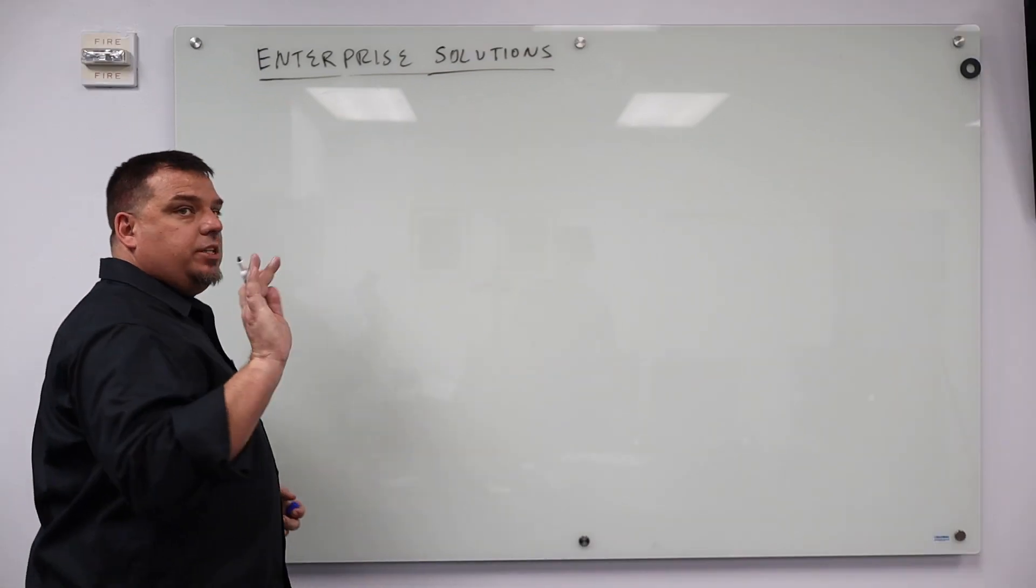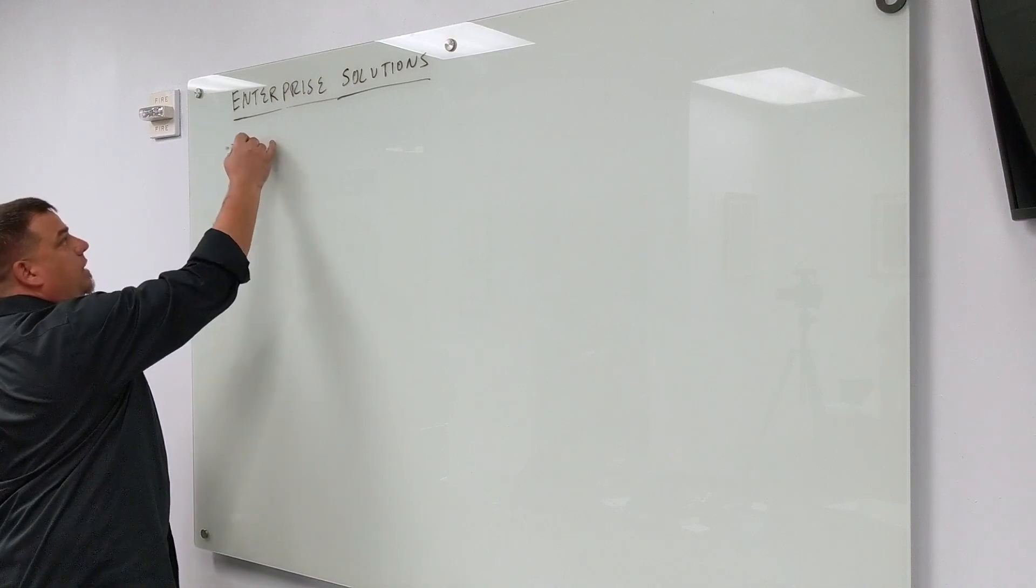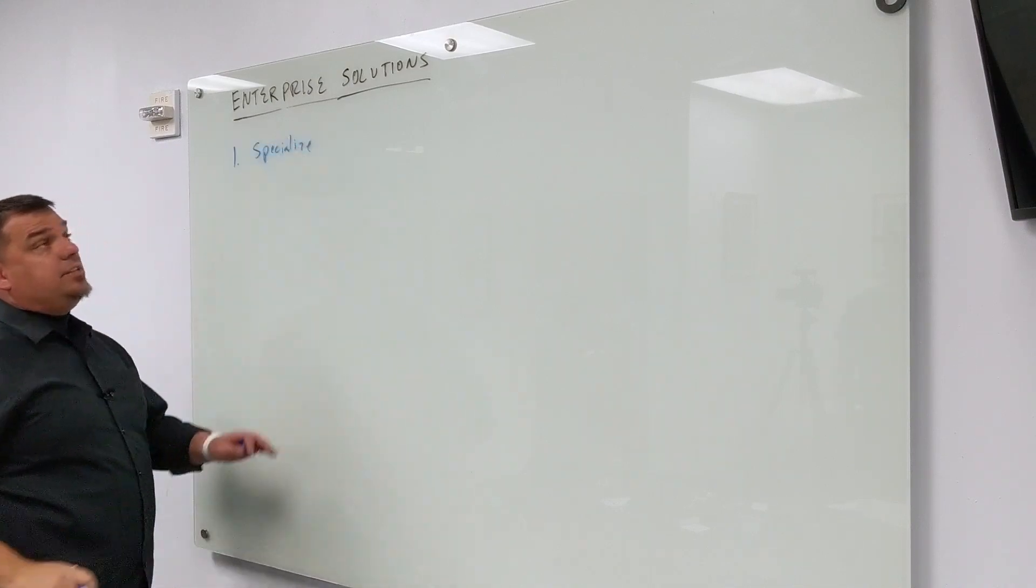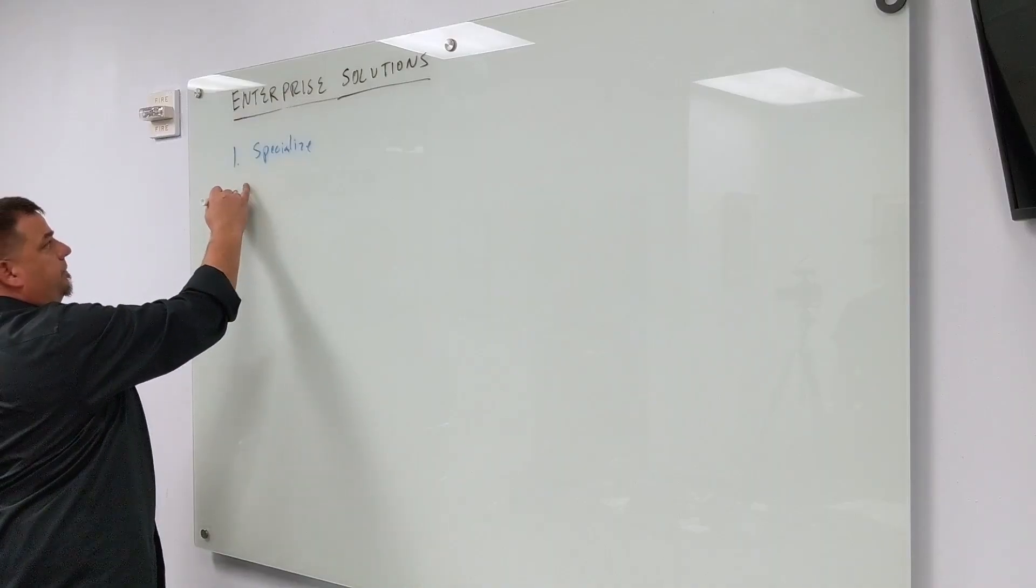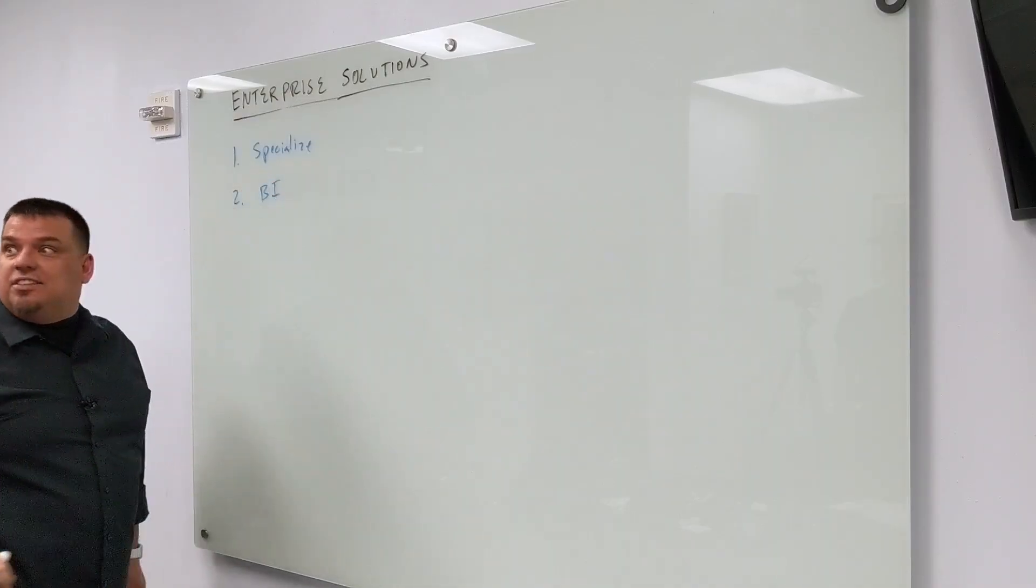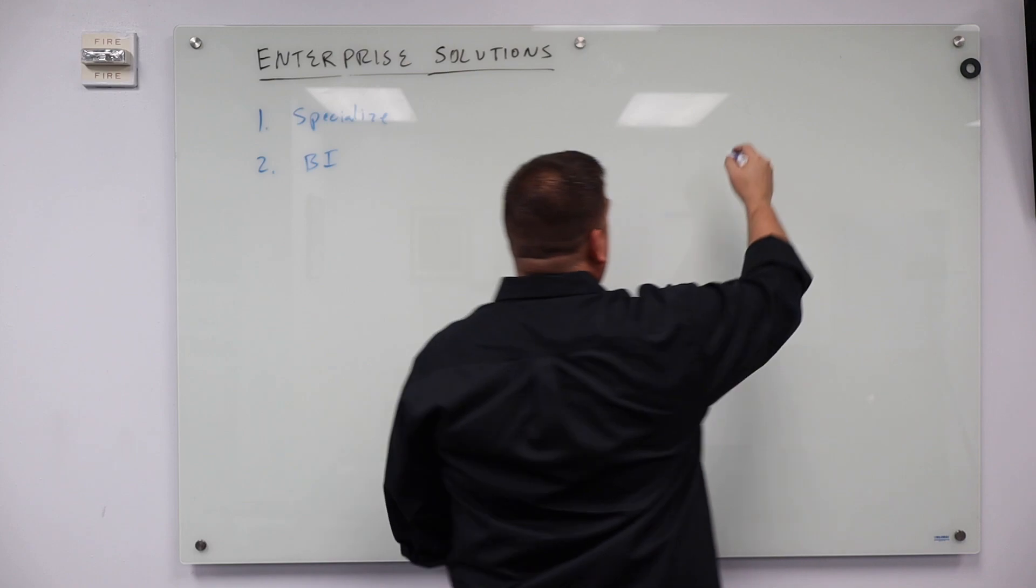So what does the integrator of the future do? Number one, they specialize, and they specialize in enterprise solutions. Number two, they have business intelligence people. They have everyone at every layer of the stack.